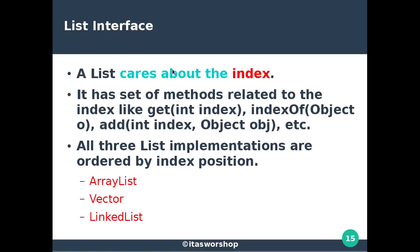A list cares about the index. Whenever you are dealing with a list, it means indexing is there. It maintains an index like a simple array — zero index, first index, second index, and so on. It has a set of methods related to the index, like get, index of, add, and more. Whenever there is a list, an index is there, and we have methods dealing with the list index.